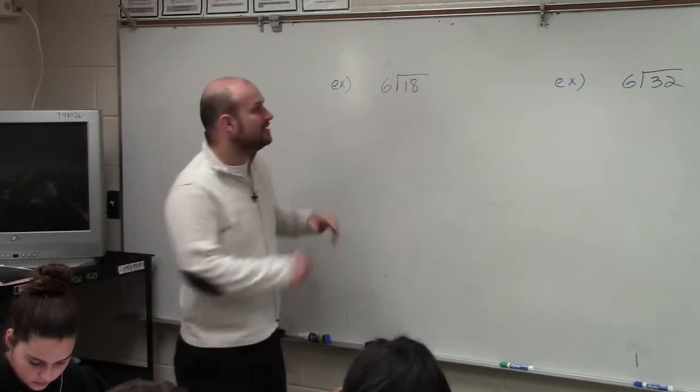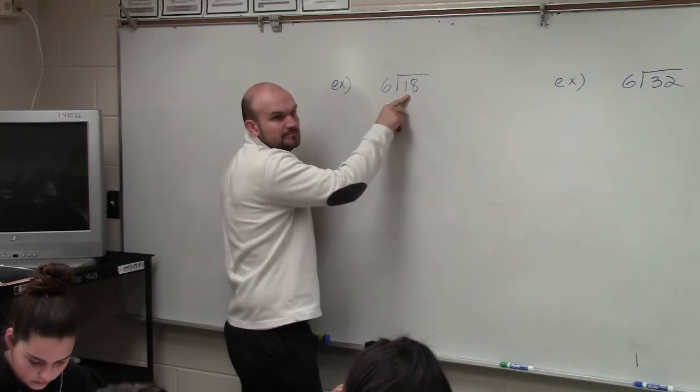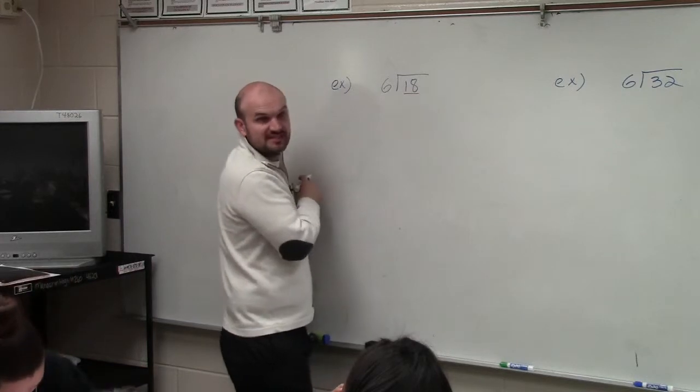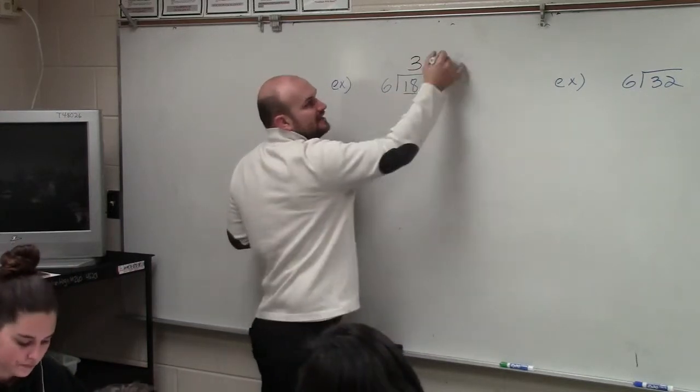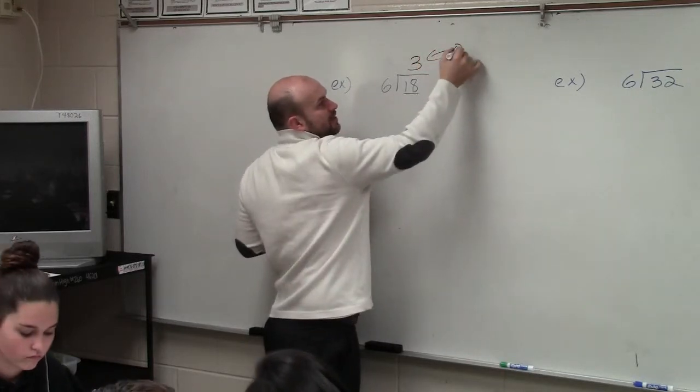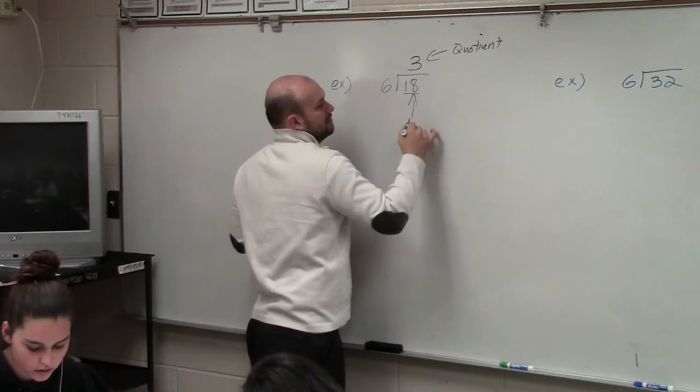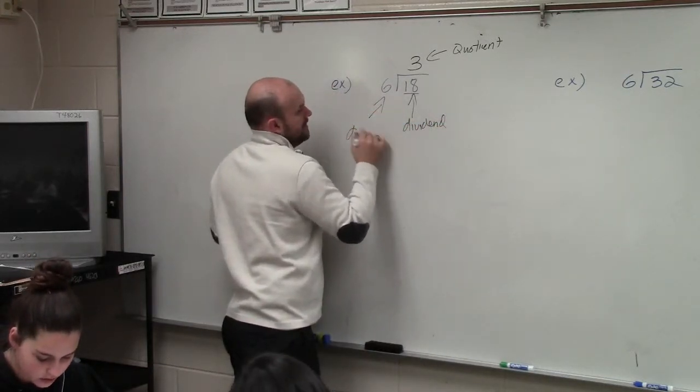So what we basically say is we start with the first number. Does six divide into one? No, it doesn't, right? So then we go to the next place value. Does six divide into eighteen? Yes, and it goes in there three times. The answer, what it goes into there, is what we call our quotient, okay?